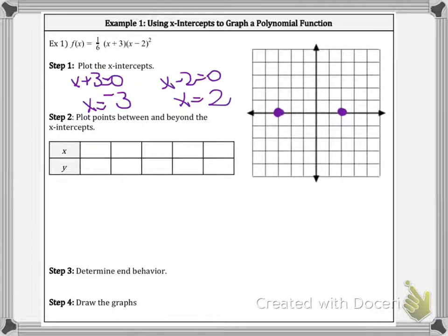Now in this form, we can't really tell what the y-intercept is. To find the y-intercept, remember, all we have to do is set x equal to 0. So we have one-sixth times 0 plus 3 times 0 minus 2 squared.